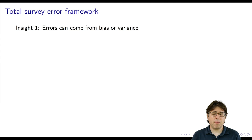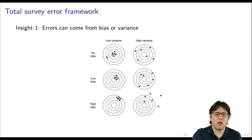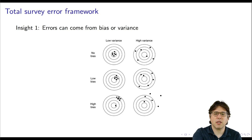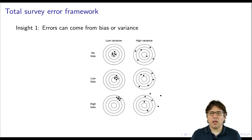The first insight is that errors can come from both bias or from variance. A picture of targets helps illustrate this. With low variance and no bias, all shots hit right in the center of the target. As we move to low bias and then high bias procedures, estimates get further and further from the center of the bullseye. A separate dimension is variance — how tight estimates are around the truth. You can see high variance estimates with no bias, high variance estimates with small bias, and high variance estimates with large bias.